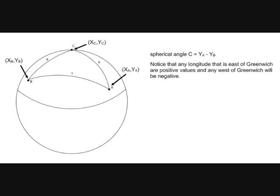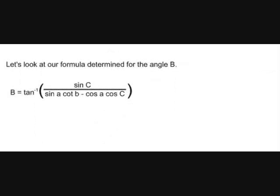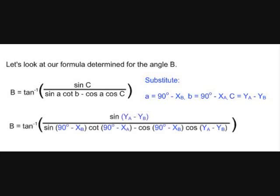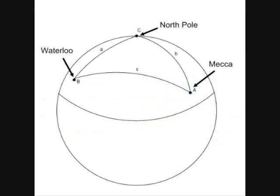Note that longitudes east of Greenwich are positive values, and those west of Greenwich are negative. Substituting A equals 90 degrees minus XB, B equals 90 degrees minus XA, and C equals YA minus YB into the formula for angle B, we get our working formula. By letting A be Mecca, B be Waterloo, and C be the North Pole, all we need are the coordinates of Waterloo and Mecca to determine the direction from Waterloo to Mecca.